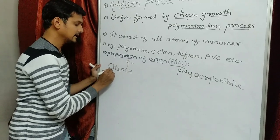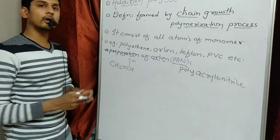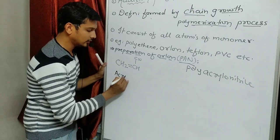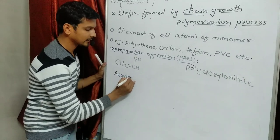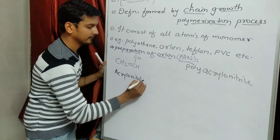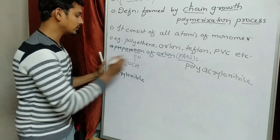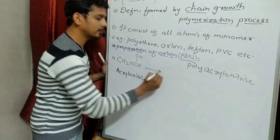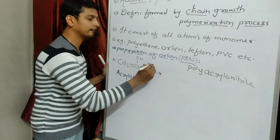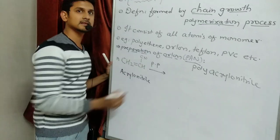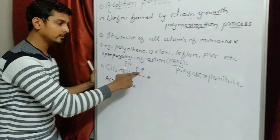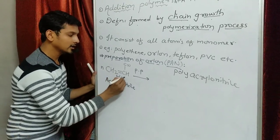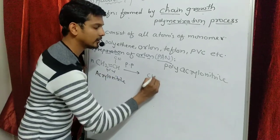So the formula is CH2=CH-CN. Its name is acrylonitrile. So this is the monomer. Obviously we have N number of monomers. Through the polymerization process, the double bond opens and the monomers link together in a chain growth process.